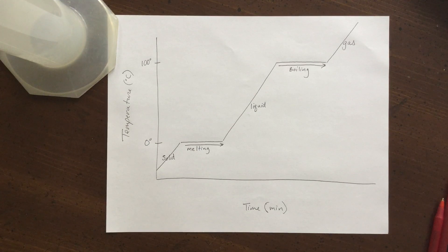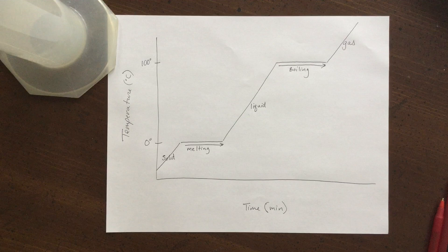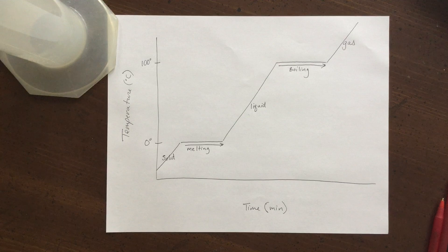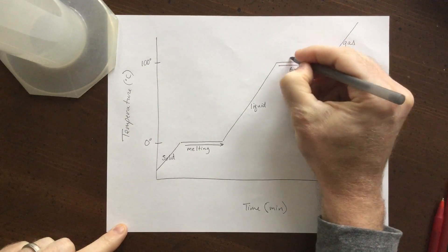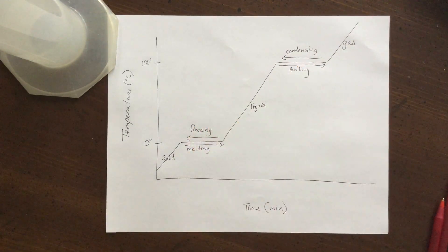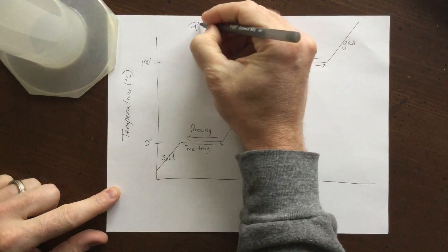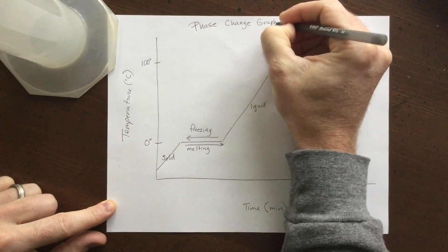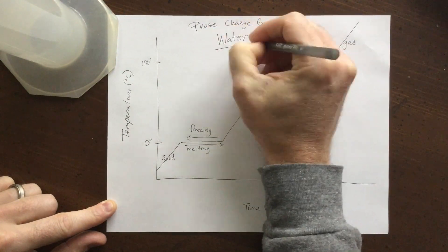One interesting thing you'll notice on this graph is that the hottest we can get liquid water to be is 100 degrees. Although at the gas phase it can get hotter. You can see if we actually reverse courses, we could go ahead and condense and turn back into a liquid and then freeze and turn back into a solid. This leaves us with one of the foundational graphs you'll find in chemistry, the phase change graph for water.